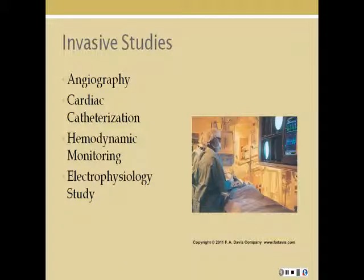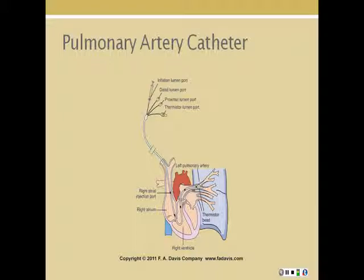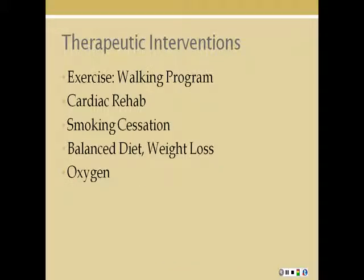Invasive types of studies include angiography, where dye is injected into the system to look at the vasculature. Cardiac catheterization allows study of heart anatomy and physiology, measurement of pressures in the heart chambers, great vessels, and coronary arteries, and interventions such as stent replacement to open blocked vessels. Hemodynamic monitoring involves a catheter attached to a transducer — this can be an arterial line or CVP monitor. CVP can also be measured indirectly through a pulmonary artery catheter, reflecting pressure in the vena cava. Electrophysiology studies can also be performed.